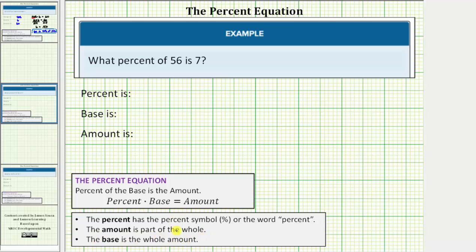Let's begin by identifying these three parts. And again, the question reads, what percent of 56 is 7? So because it reads, what percent, the percent is the unknown, let's use the variable p for percent.